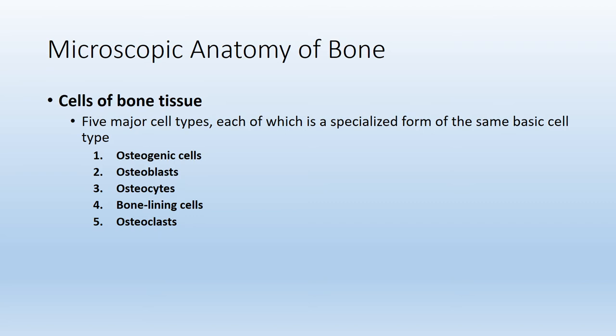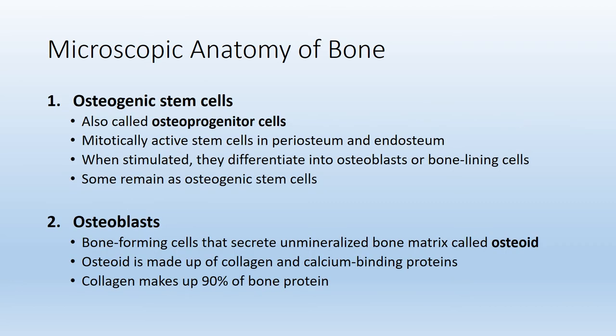We'll talk about each of the five cell types in greater detail: osteogenic cells, osteoblasts, osteocytes, bone lining cells, and osteoclasts. The first type of cell found in osseous tissue is known as an osteogenic stem cell, also referred to as an osteoprogenitor cell. These stem cells are found in the periosteum and endosteum — two membranes that surround bone — and when stimulated, they give rise to most bone cells like osteoblasts or bone lining cells.